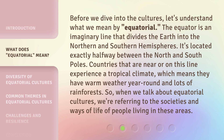Before we dive into the cultures, let's understand what we mean by equatorial. The equator is an imaginary line that divides the Earth into the northern and southern hemispheres. It's located exactly halfway between the north and south poles. Countries that are near or on this line experience a tropical climate, which means they have warm weather year-round and lots of rainforests. So when we talk about equatorial cultures, we're referring to the societies and ways of life of people living in these areas.